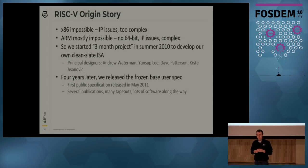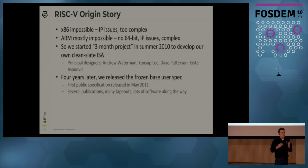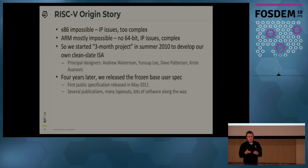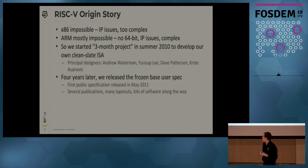So x86 and ARM really aren't viable. At the time, we started a three-month-long summer research project to design our own ISA. Four years later, we managed to actually release the base user ISA specification that was frozen — it took four years because we were doing a lot of things in the meantime.